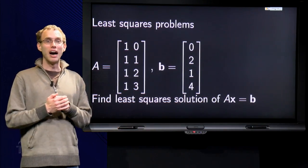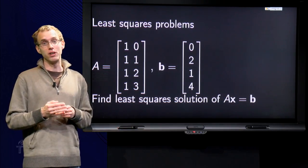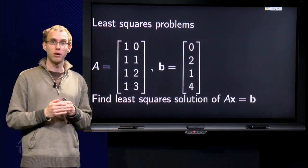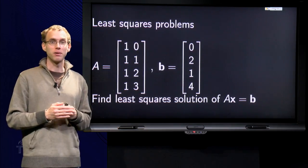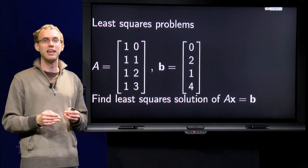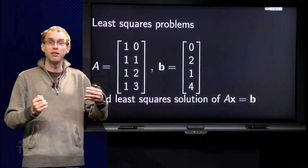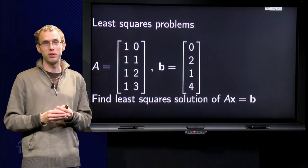We now know how to find the least squares solution of Ax = b if the columns of A are orthogonal. Then we can compute b hat directly and solve Ax equals b hat. If the columns of A are not orthogonal, it is usually faster to use the normal equations.